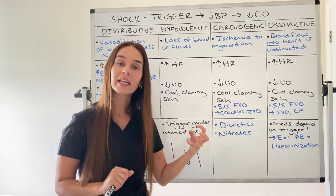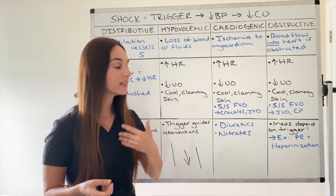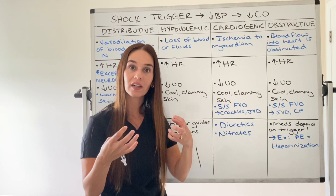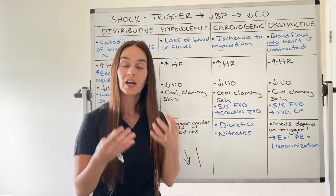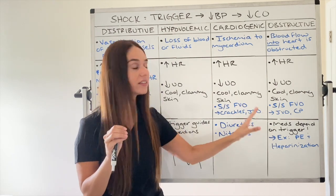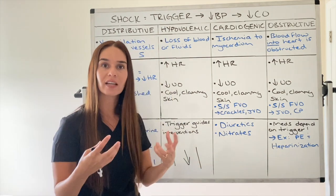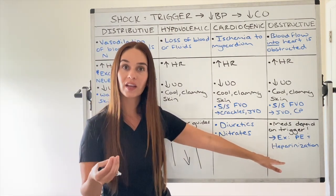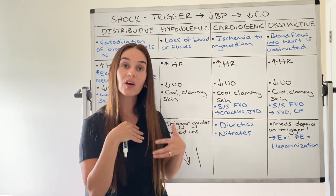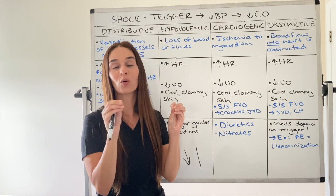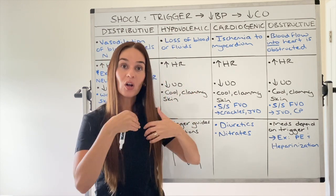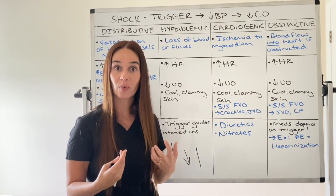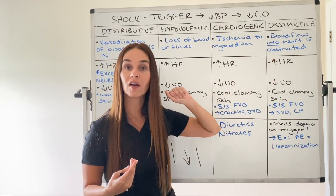For obstructive shock, medications are always reliant on the trigger. Using a pulmonary embolism as the example, we might administer heparin or thrombolytics — things that help alleviate a blood clot. You would not see heparinization for hypovolemic shock, for instance. If the cause is cardiac tamponade, cardiac intervention may be needed — pericardiocentesis, removing the fluid around the pericardial sac to alleviate the obstruction.